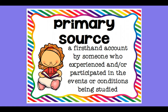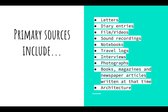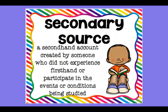A primary source is a first-hand account of someone who experienced and participated in the events that we're studying. Primary sources include things like letters and diary entries, notebooks and interviews, photographs, and books and magazines that were written at the time of the event.